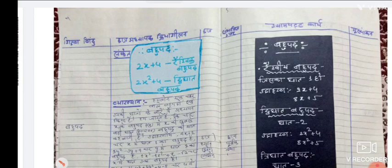Here first we paste a small chart paper work. Bahupad: 2x + 4 = raikhik bahupad (linear polynomial). 2x² + 4 = dwighat bahupad (quadratic polynomial).